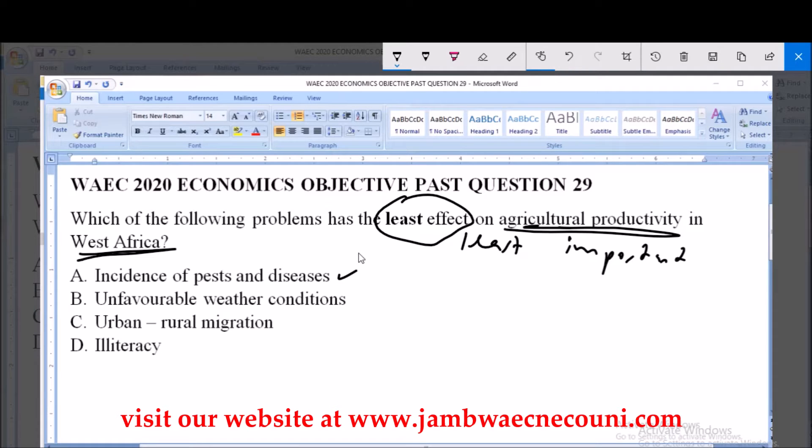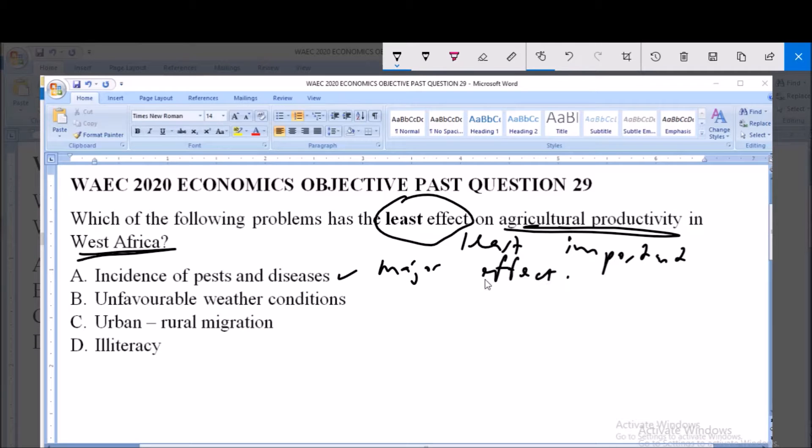Now incidence of pests and diseases has major effect on agricultural productivity. It has a major effect as the problem of controlling pests and diseases of plants and also of farm animals is a major issue that affects agricultural productivity in West Africa. So it has a major effect and we are asked for the one that has the least effect, hence this is not the answer to the question.